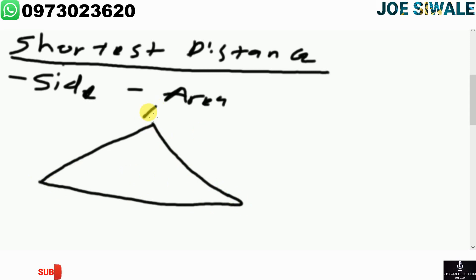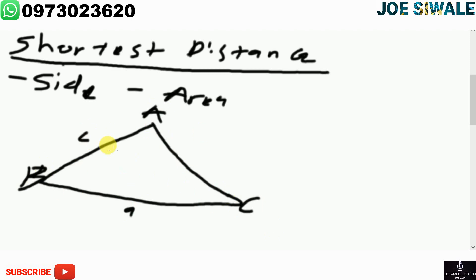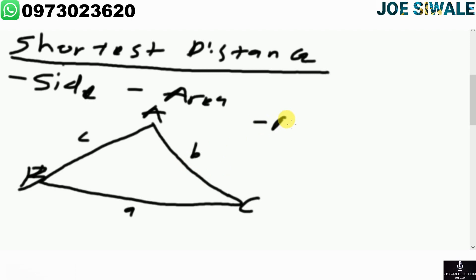In this triangle, I have a, b, and c. I know that this is small letter a, this is small letter c, and this is small letter b. I can only calculate the shortest distance of this non-right angled triangle if I know the area and if I know the side. The preconditions are: the area is known and you also know the side.